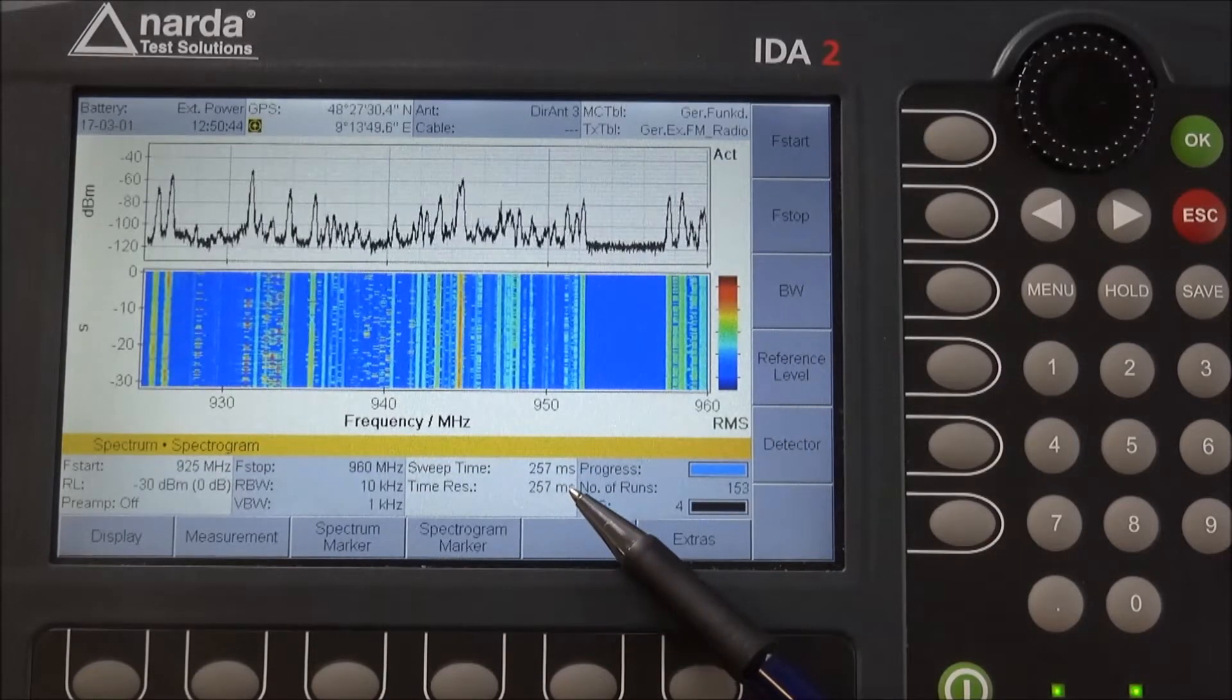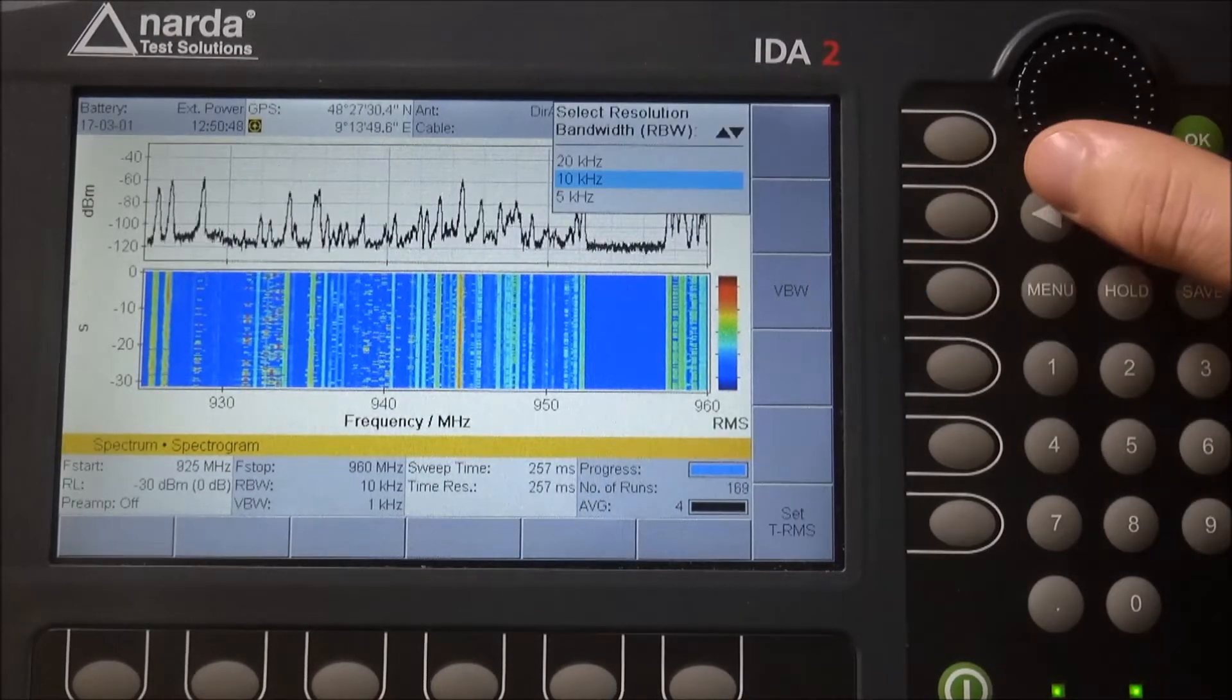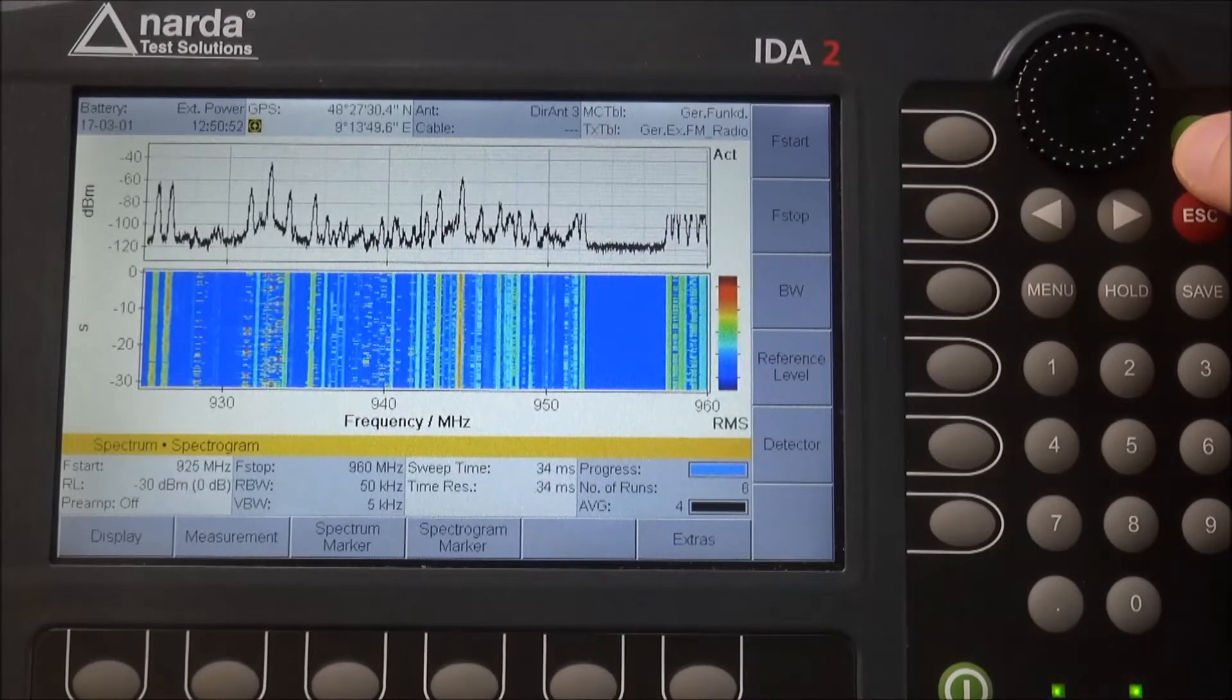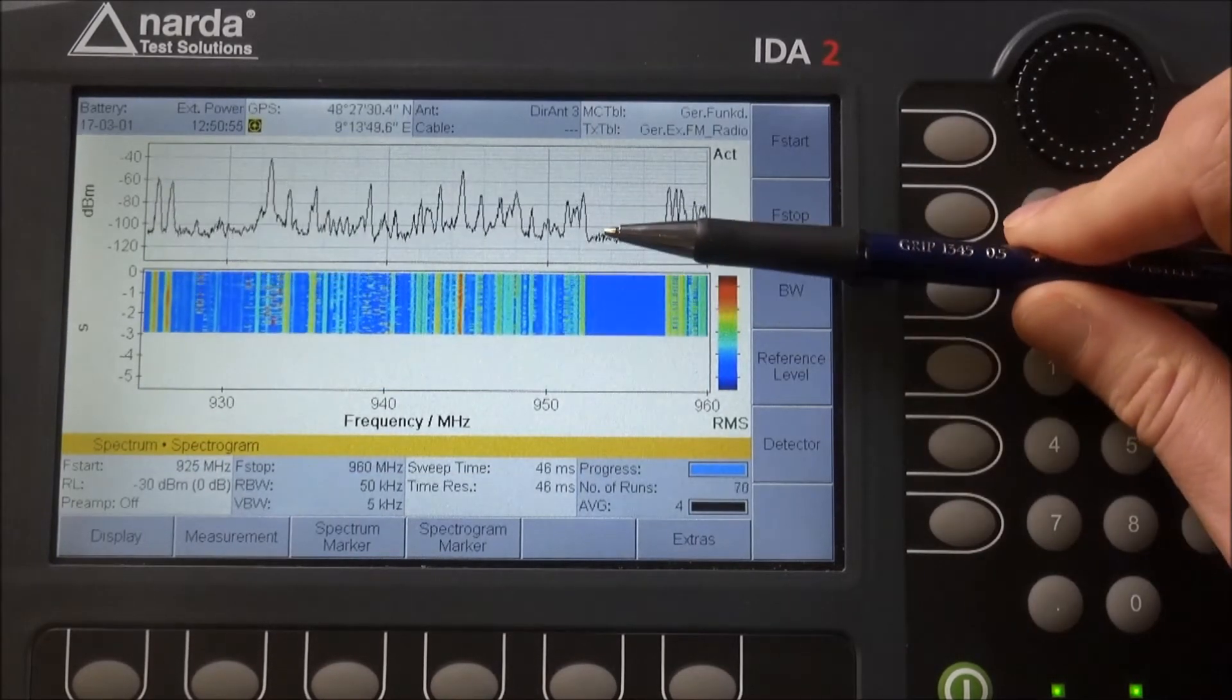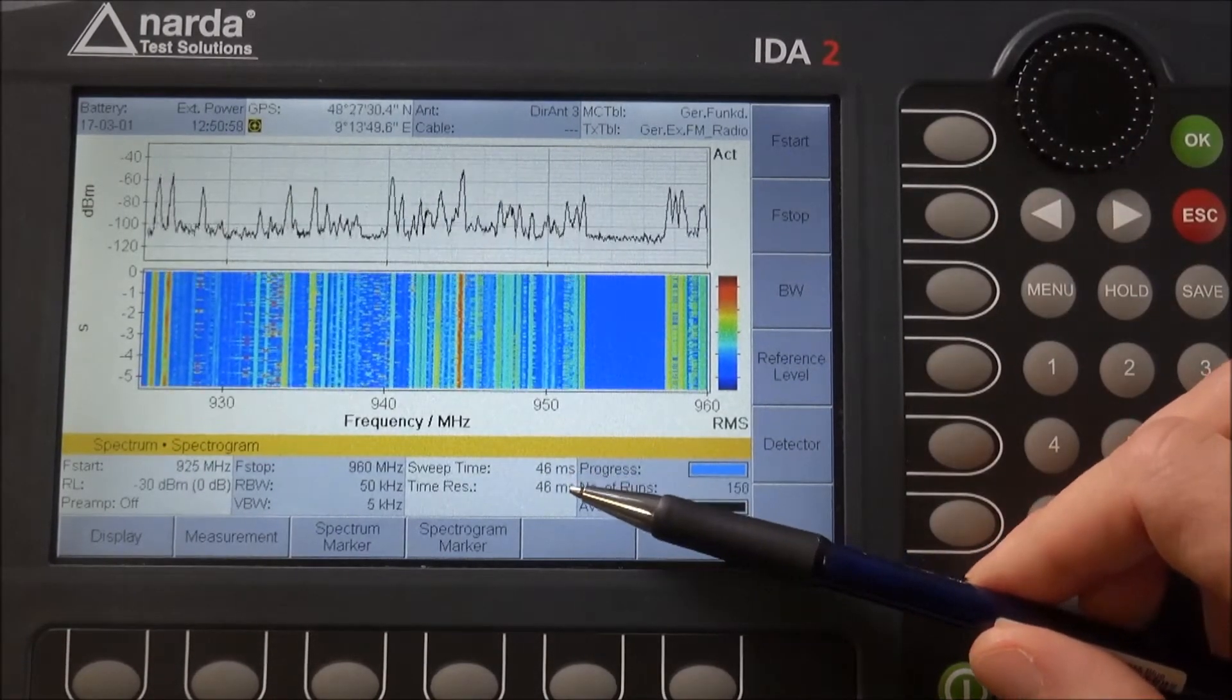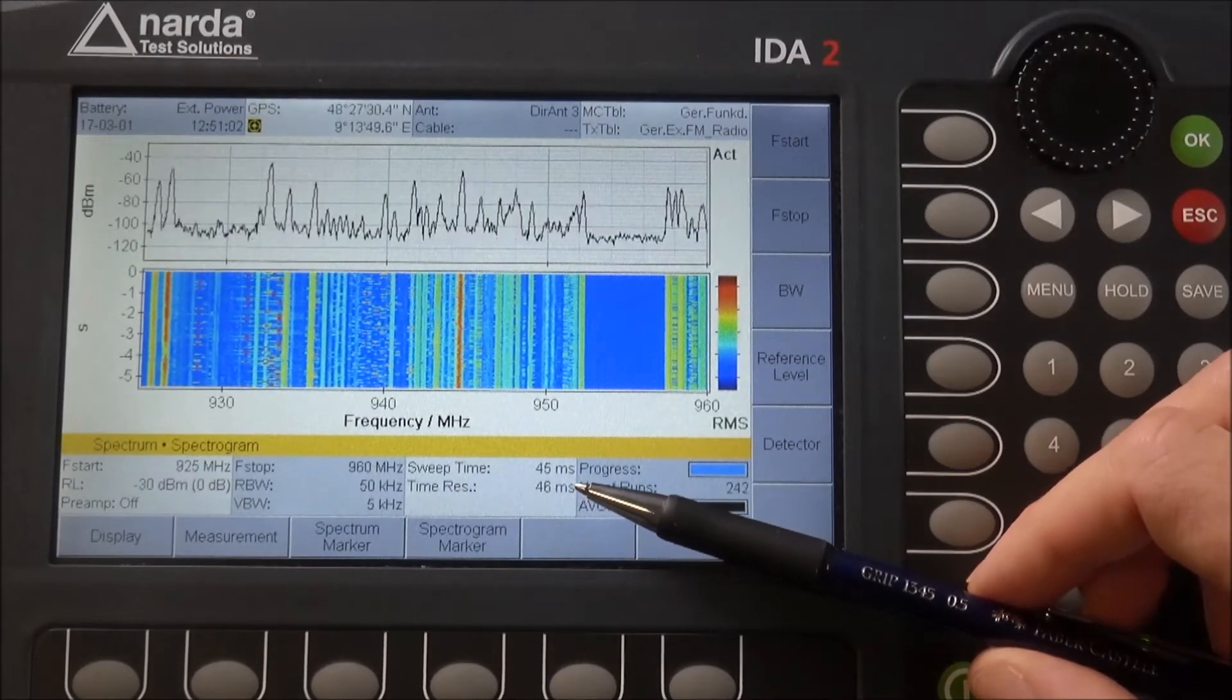To enhance that and decrease the sweep time, we can increase the RBW to, for example, 50 kilohertz. That will increase our noise floor, but we'll have a much lower sweep time.